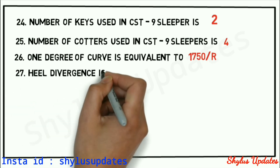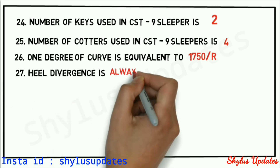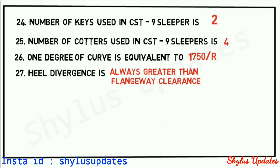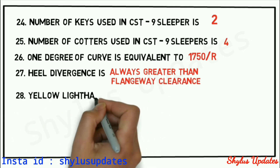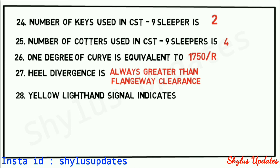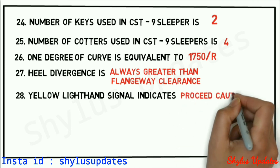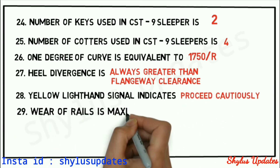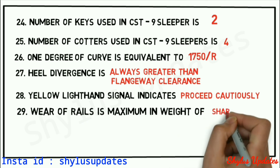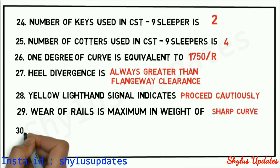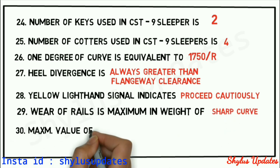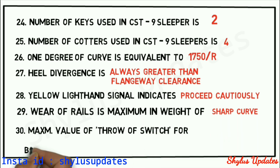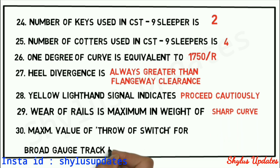Heel divergence is always greater than flangeway clearance. Yellow light hand signal indicates proceed cautiously. Wear of rails is maximum at the inside of a sharp curve. Maximum value of throw of switch for broad gauge track is 115 mm.